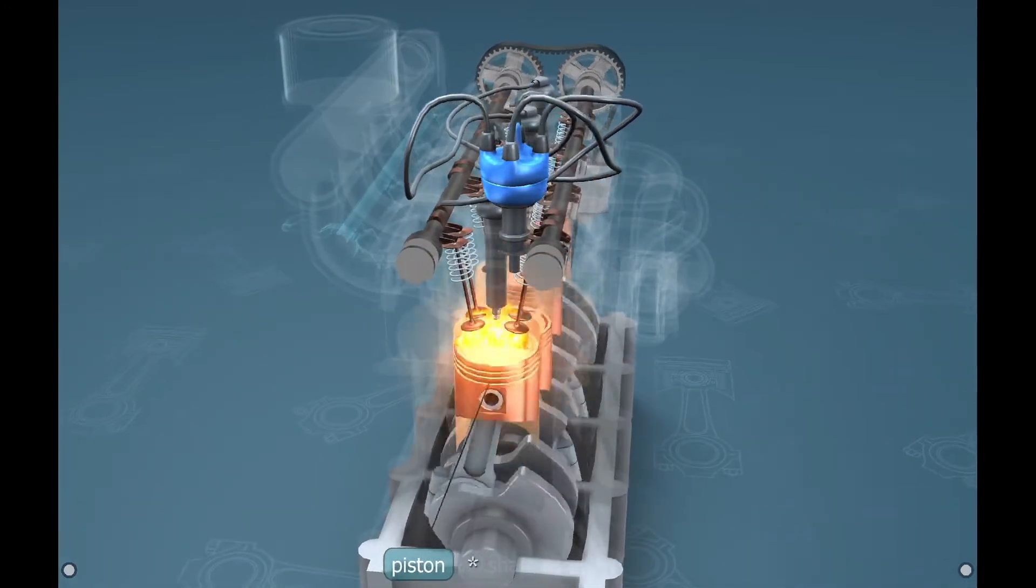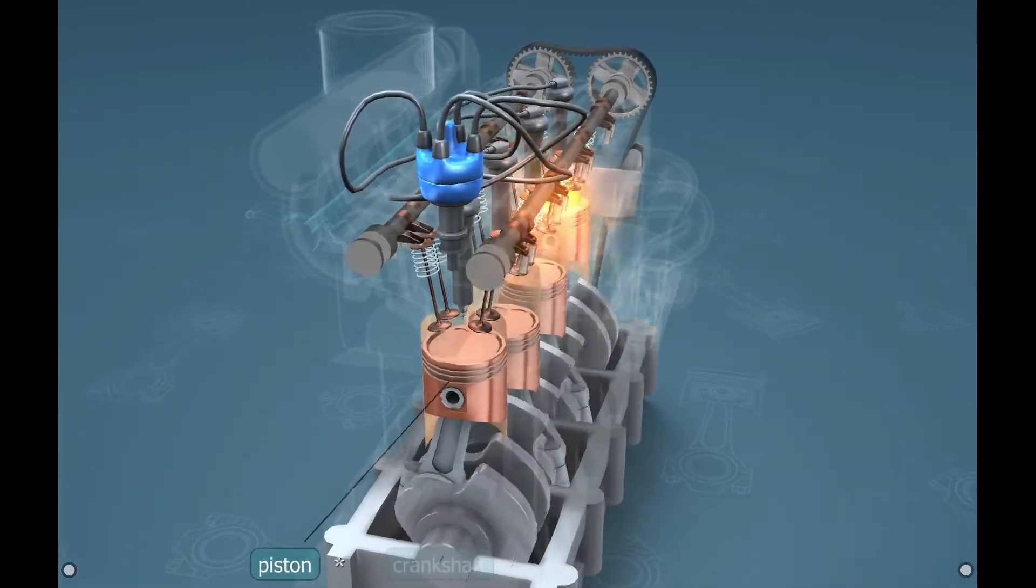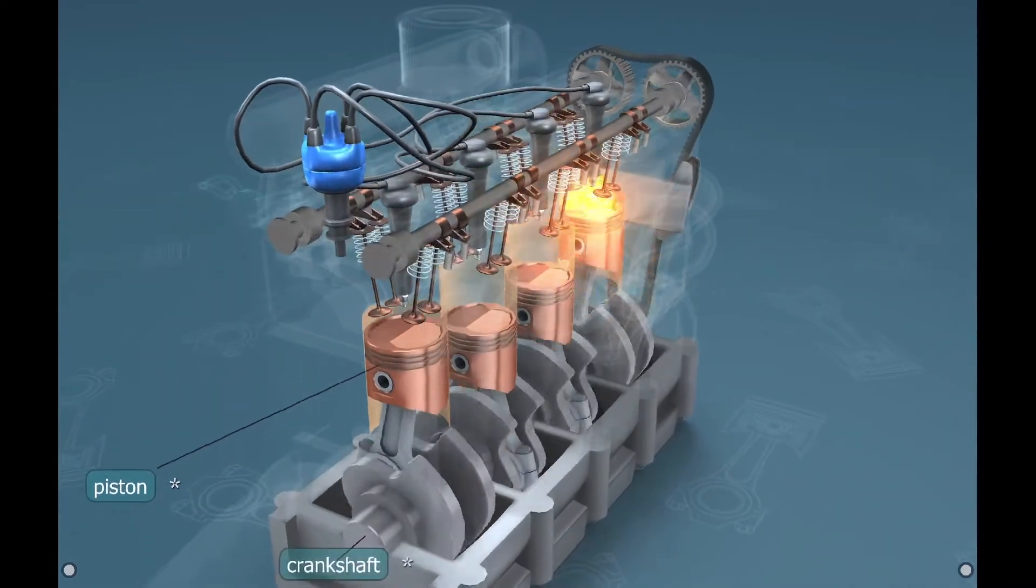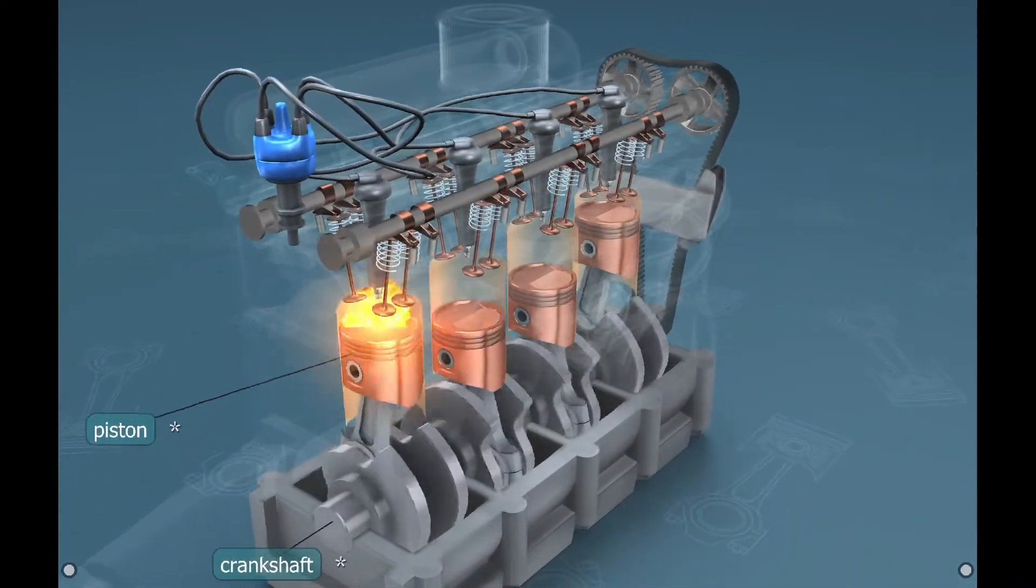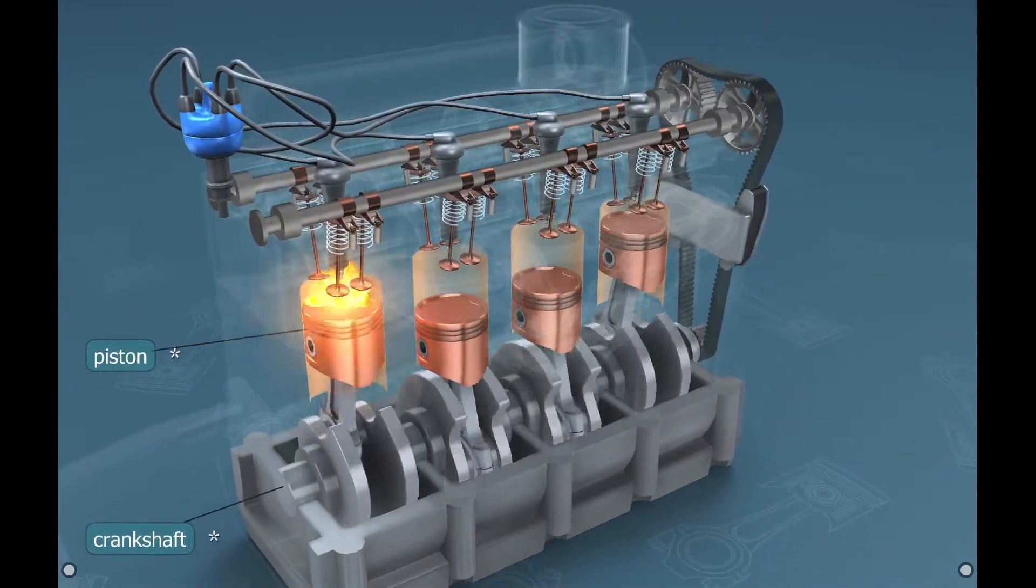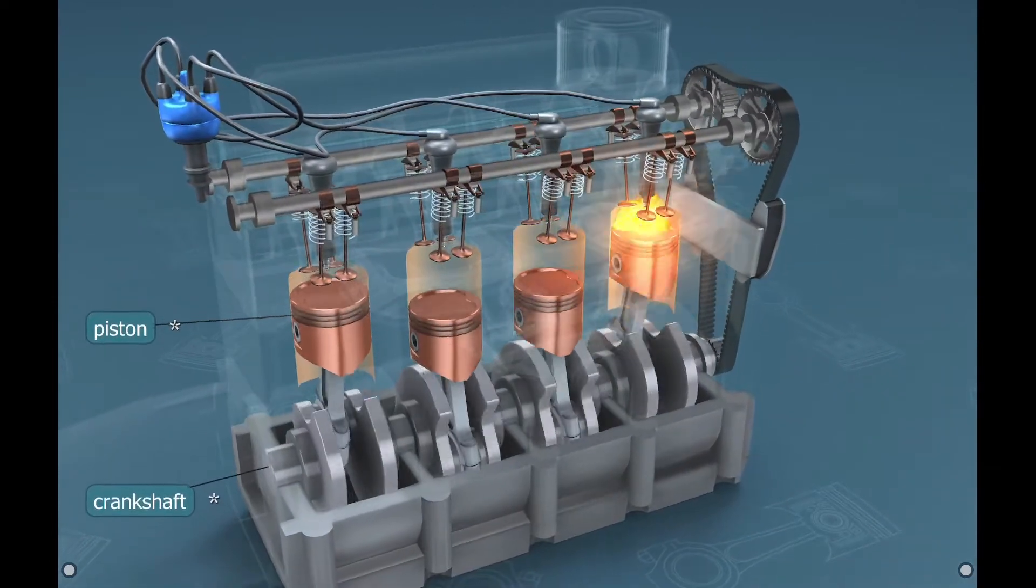This burning normally takes place via rapid propagation of flame front through the mixture. But if the unburned portion of the fuel in the combustion chamber is heated too much, pockets of unburned fuel may self-ignite before the main flame front reaches them.